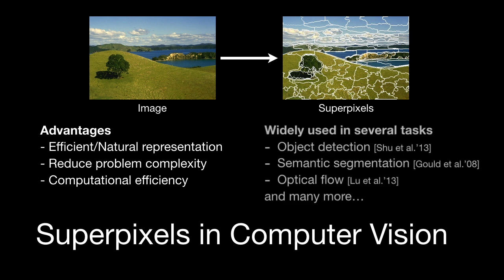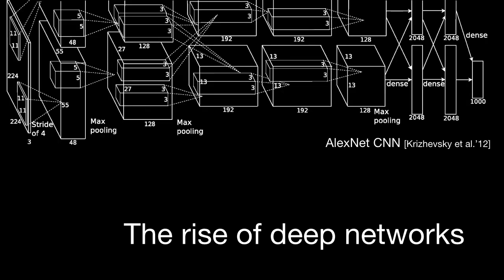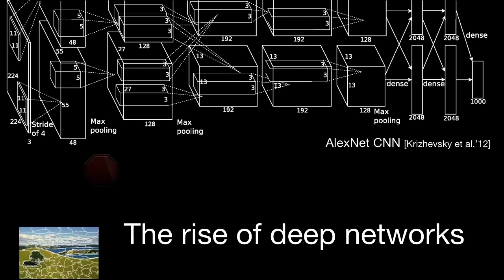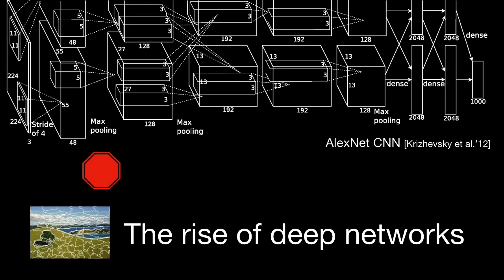Superpixels are used in a wide range of computer vision tasks such as object detection, semantic segmentation, optical flow, to name a few. Recent years have witnessed a dramatic increase in the adoption of deep learning for a wide range of computer vision problems. With the exception of a few methods, superpixels are rarely used in conjunction with deep networks.